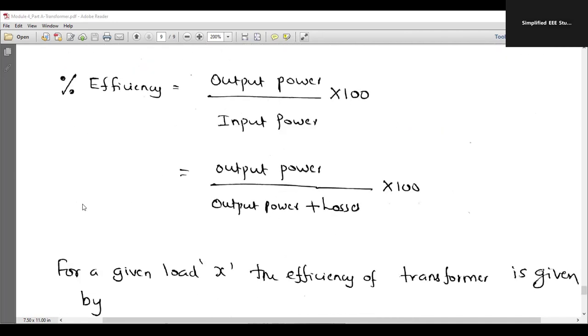By the way, one more modification I can do in the equation. Please observe here. Efficiency can be written as output power upon input power is replaced with the sum of output power and the losses. The important losses are copper loss and core loss. So equation can be modified in this specific way.